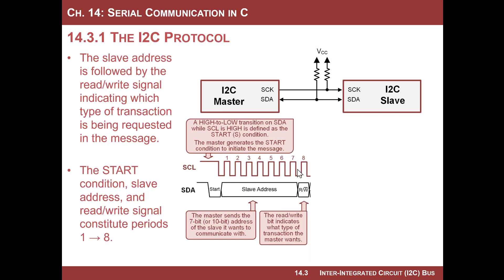After the master provides the slave address, in period 8 it provides a read or write signal. That tells slaves out there whether the master wants to read or write. The logic polarity: read/write with a line over it means a 1 is a read attempt, and a 0 is a write attempt. Periods 1 through 8 constitute the slave address and read/write signal, and every master message will have those periods.